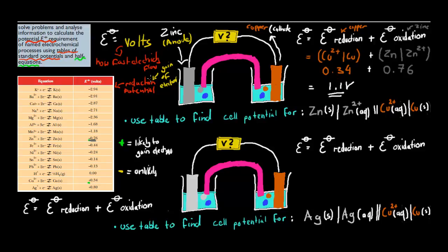And because it's positive overall, that means the reaction will go ahead. If it's negative, the reaction won't go ahead. So this was the actual first example question: use the table to find the cell potential for elemental zinc going into zinc ions, and copper ions going into copper elemental. That's what we just did.